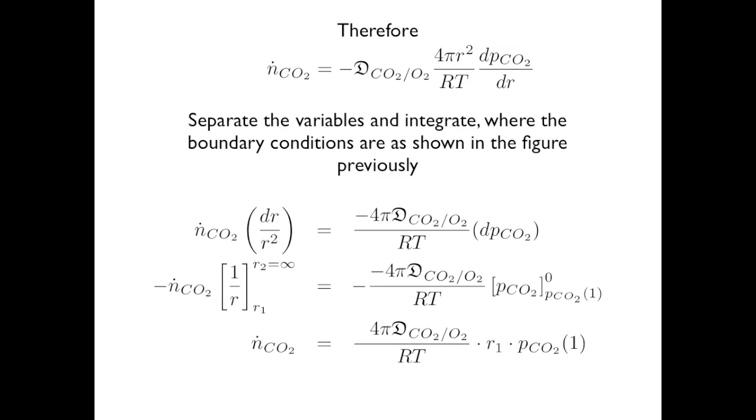We separate the variables, taking the dr term and collecting the r's from the 4πr², leaving the dp term on the right. That large term preceding dp is a constant; nothing there depends on p or r.